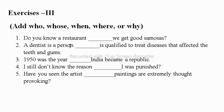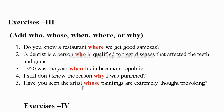In the third exercise, again you need to add a suitable relative adverb or pronoun: who, whose, when, where or why. First: Do you know a restaurant — blank — we get good samosas? We are talking about a restaurant, which is a place, so we take 'where'. Next: A dentist is a person — blank — is qualified to treat diseases affecting the teeth and gums. We are talking about a person, so we take 'who'.